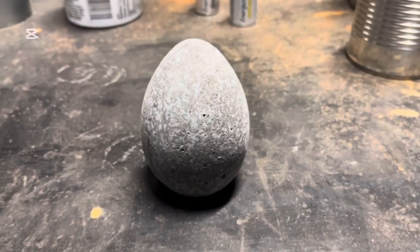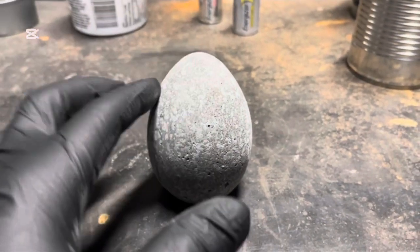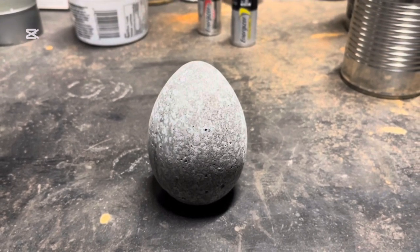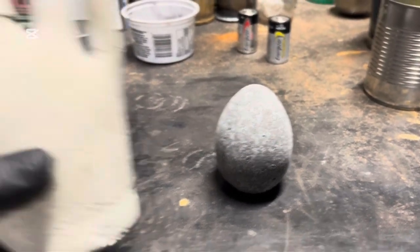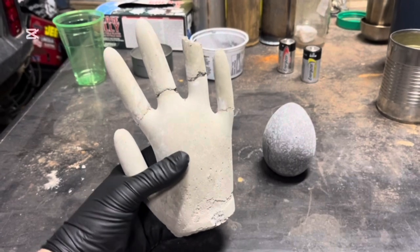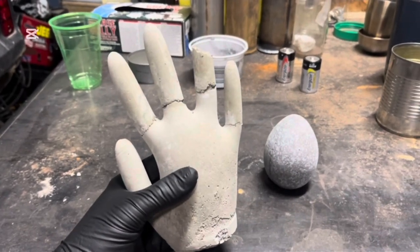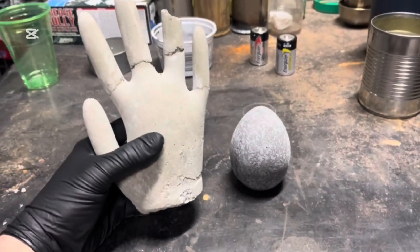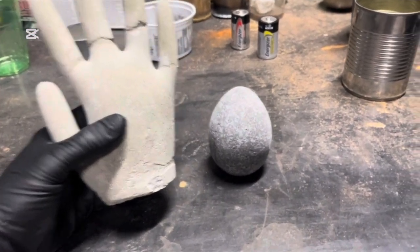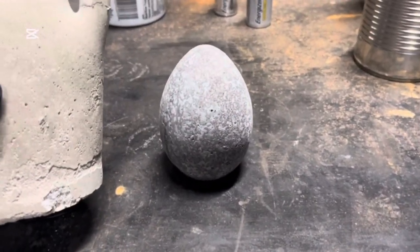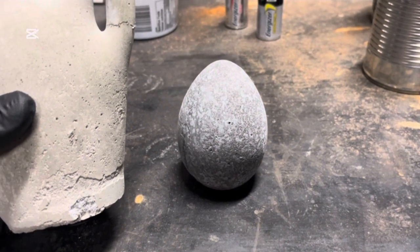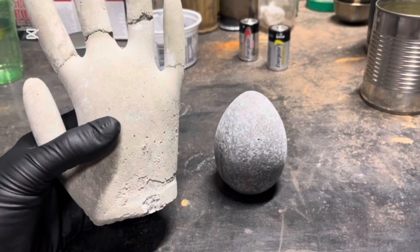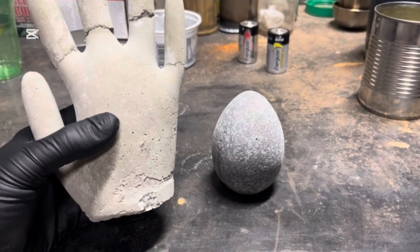To help visualize the color difference between this concrete egg and just regular ready-mix concrete, we just have to take a look at this hand. As you can see, this one did not come out of the mold very well, but there is quite a dramatic color difference. I personally think that the dark concrete looks way better than concrete without pigment altogether.